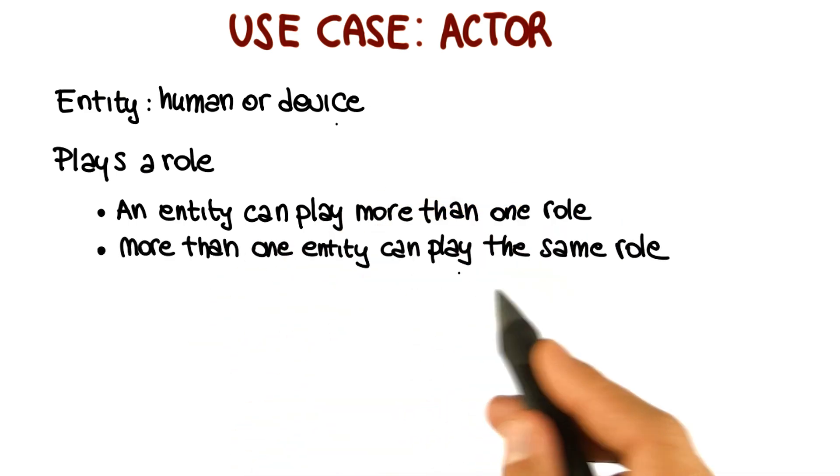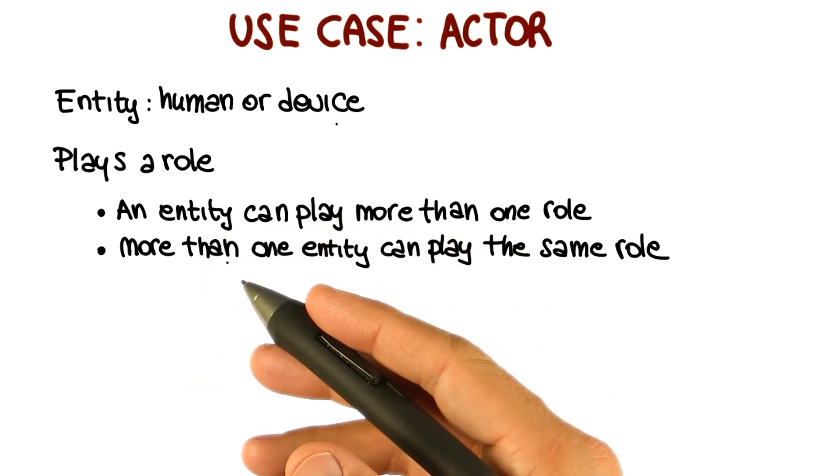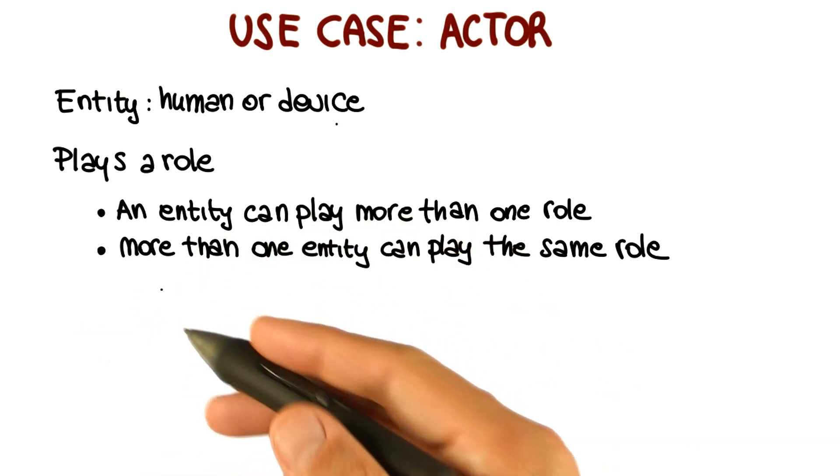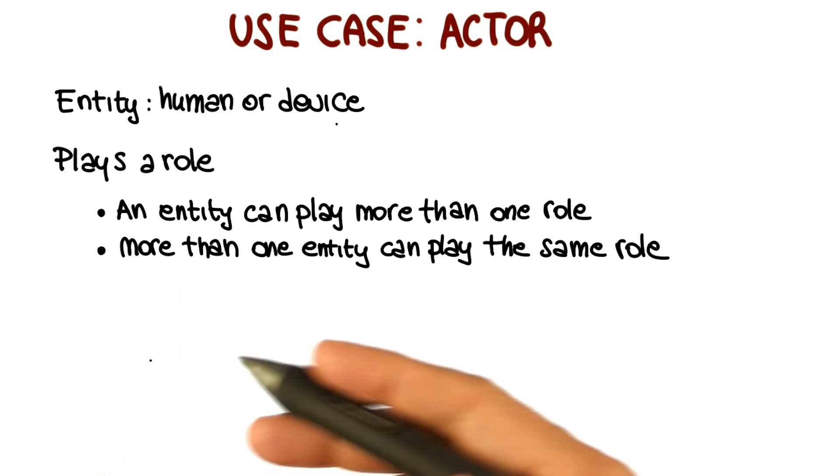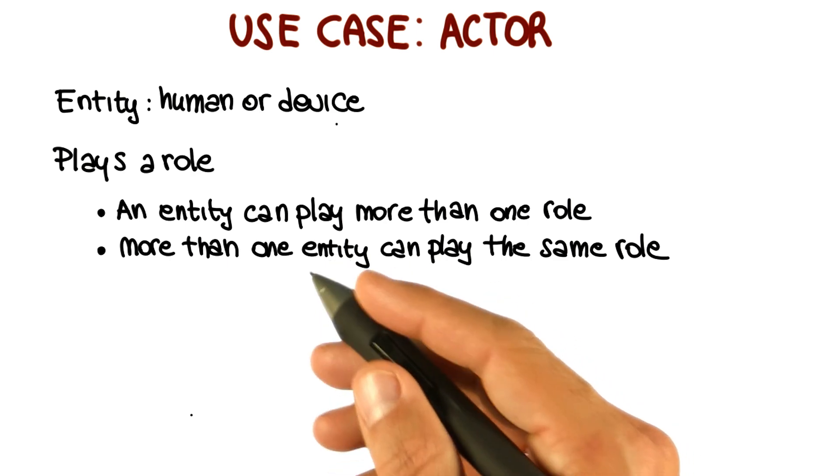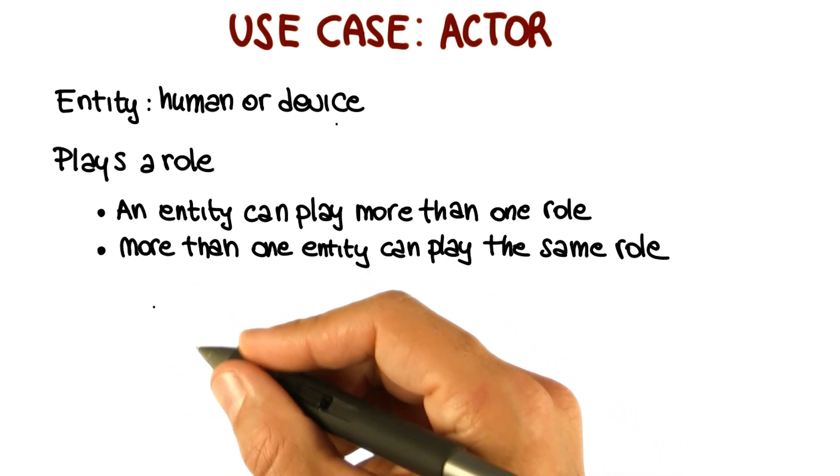And obviously, more than one entity can play the same role. Using the same example, we can have both an employee of the bank and just a regular customer playing the role of the customer. So again, it all depends on what the entity does, how the entity interacts with the system, what kind of functionality of the system the entity uses.